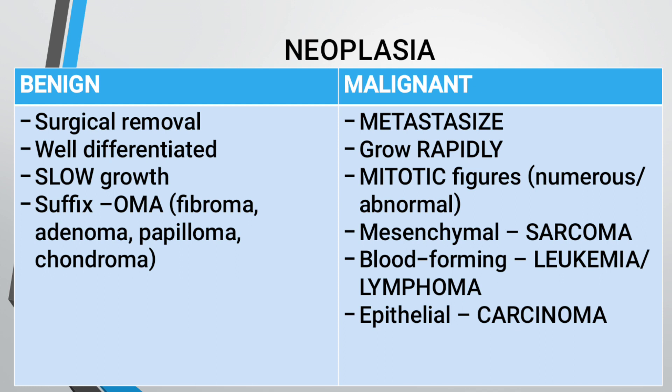Malignant neoplasia involves metastasis; these grow rapidly. They have abnormal mitotic figures and grow in numerous numbers. They are mesenchymal; the suffix used is also '-oma.' For mesenchymal tumors we say sarcoma. In the case of blood-forming tumors, we call it lymphoma or leukemia. In epithelial origin, we call it carcinoma.